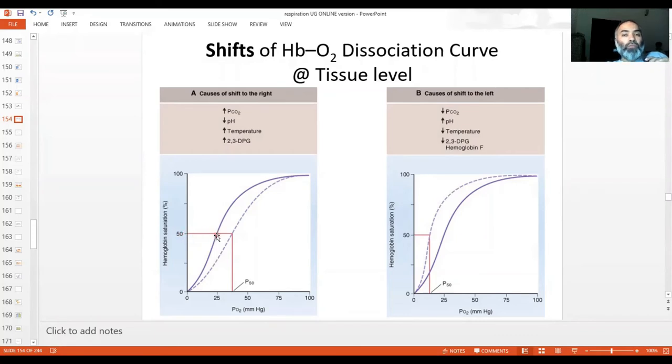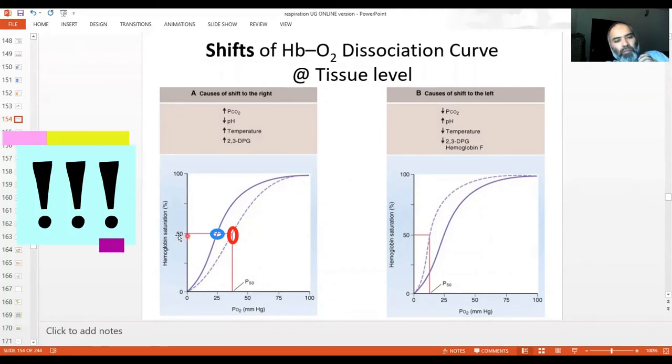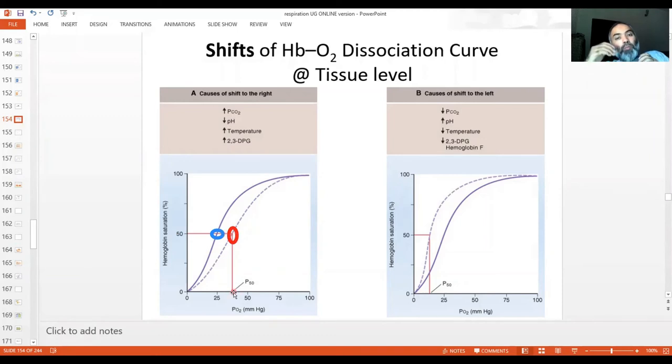Now if you move the curve towards the right or downwards, what will happen? This point of intersection right here will be shifted to a new point, which is here. So there will be a rightward - the intersection would occur at a more rightward point. So what does this physiologically really mean? It means that to achieve the same 50% hemoglobin saturation, we now require more PO2.